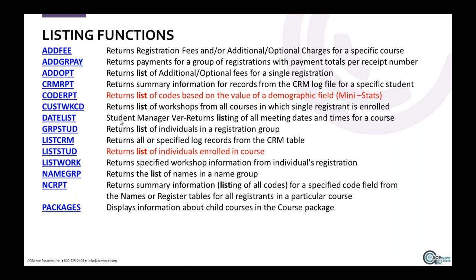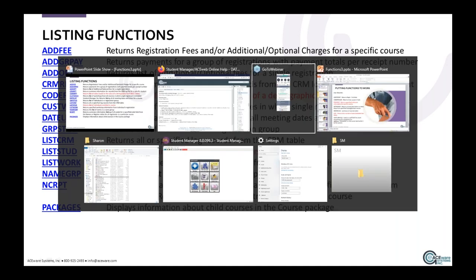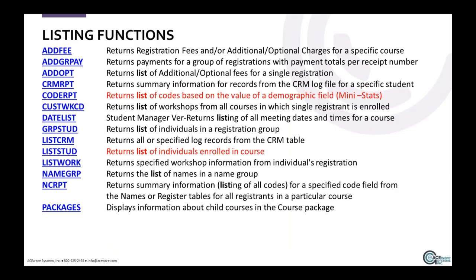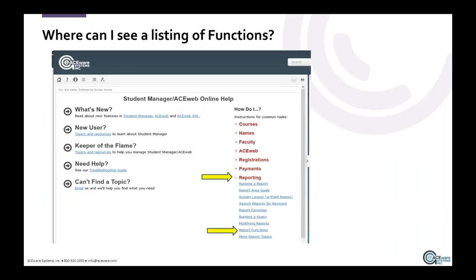Date list returns a list of individuals in a registration group, CRM records, a list of students enrolled in a course. Also listing workshops, listing the names in a name group — so if you're using the family grouping on the name record in student manager, the function name group will allow you to run a list of all the names in that name group. NC reports have some unique summary listing packages for packaging — showing mother courses and their child courses.